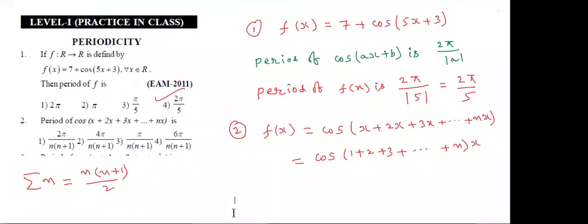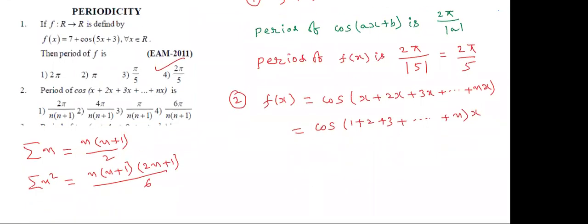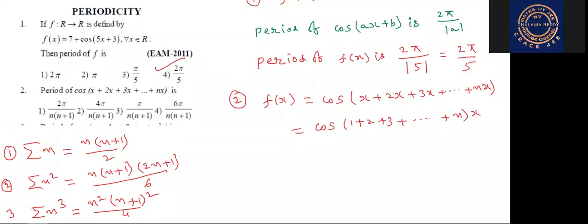What about sigma n squared? The sum of squares of n natural numbers — the formula is n(n+1)(2n+1) by 6. And sigma n cubed, the sum of cubes of n natural numbers, is n²(n+1)² by 4. So: sigma n = 1+2+3+...+n; sigma n² = 1²+2²+3²+...+n²; sigma n³ = 1³+2³+3³+...+n³.